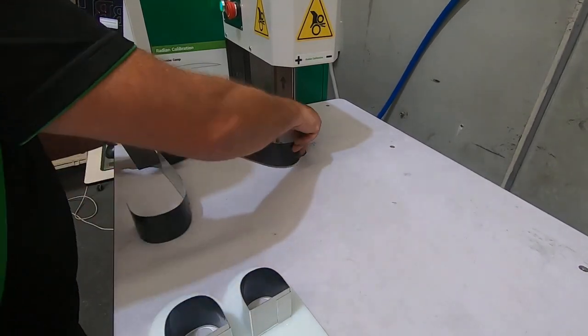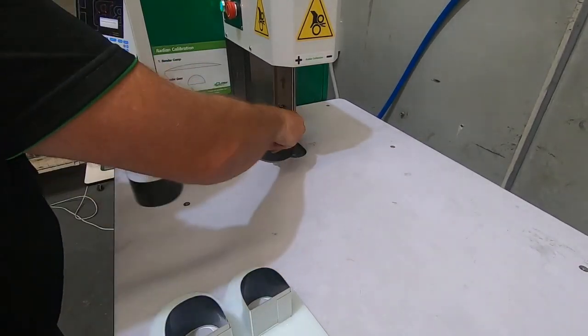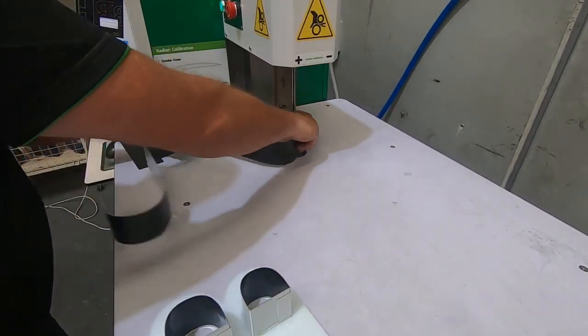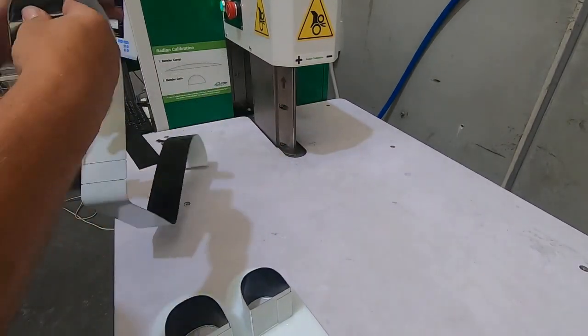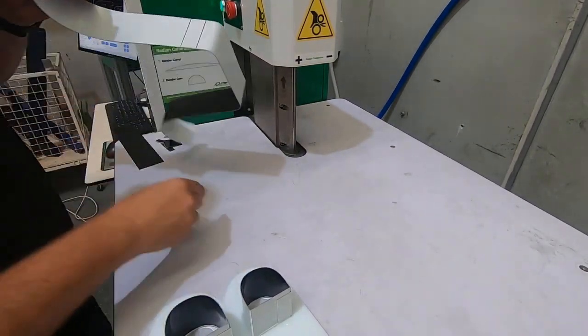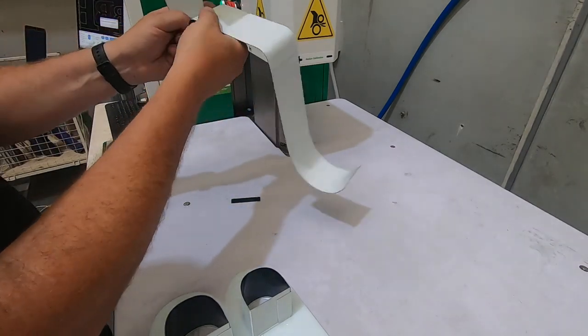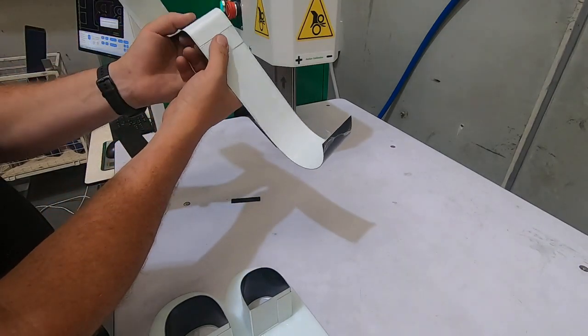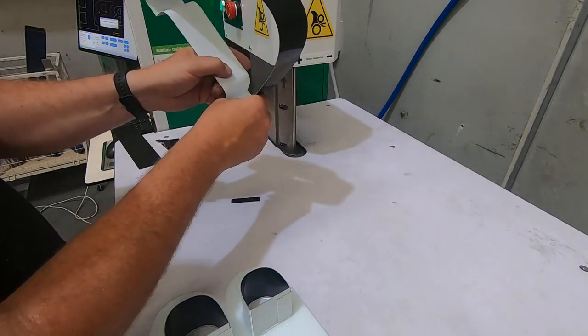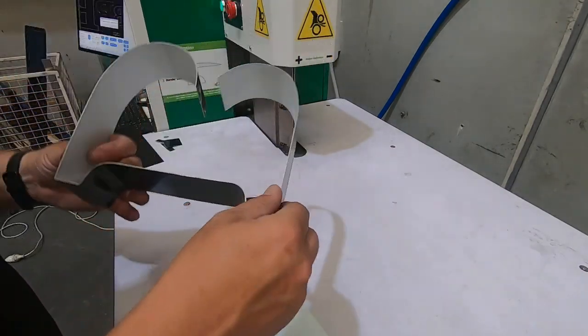Starting to take shape now. There we go, so that's the body of our B done. We'll slip that off, snap our little bit of waste off, and as simple as folding it on those score lines. As you can see, the B takes shape straight away. Look at that.